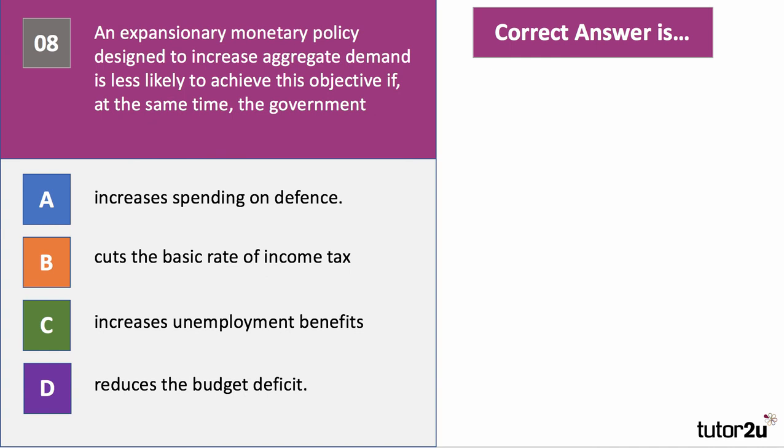Three more questions to go. Question eight: an expansionary monetary policy designed to increase aggregate demand is less likely to achieve this objective if, at the same time, the government does what? The central bank is expanding monetary policy — when will a government response hold back the objective of increasing aggregate demand? Choose A, B, C, or D.